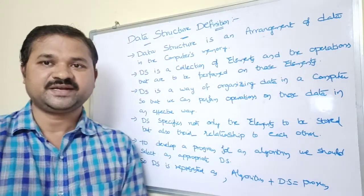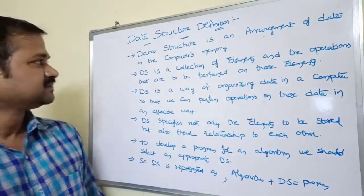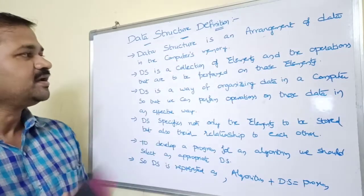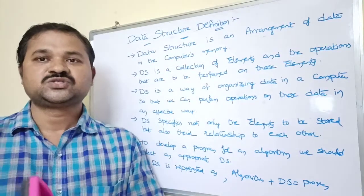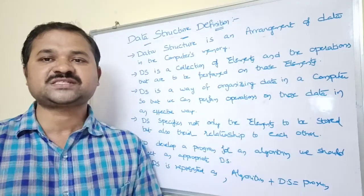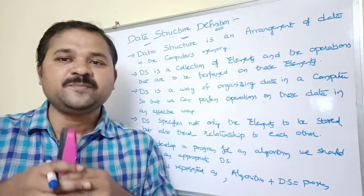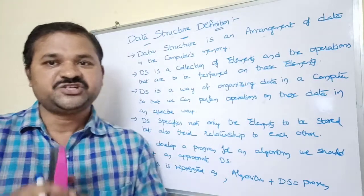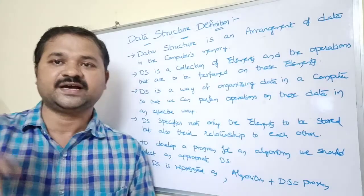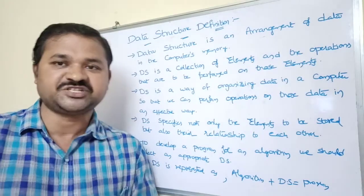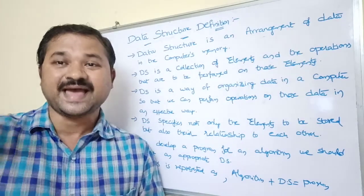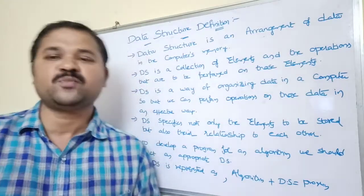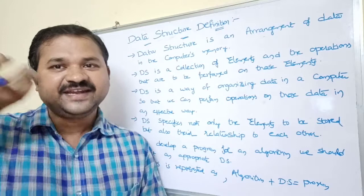Let's see the definition of data structure. A data structure is an arrangement of data in the computer's memory. It mainly specifies how data will be stored — either in contiguous (adjacent) memory locations or non-adjacent memory locations.